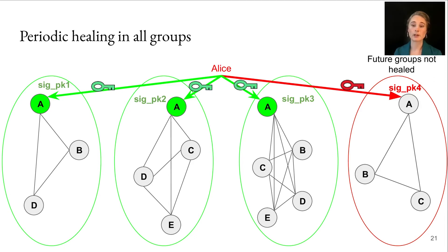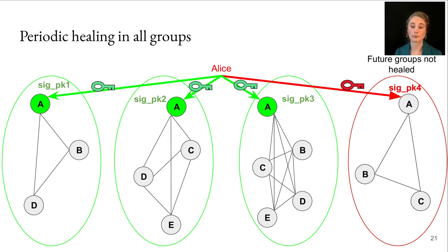Another update option is periodic updates. This helps protect against information leakage, but not the future group problem. Essentially, on a periodic basis — say, a day or a month, however often she chooses — she rotates all her signature keys. But when new groups come about, according to all our current protocols, she would not be healed in that group.